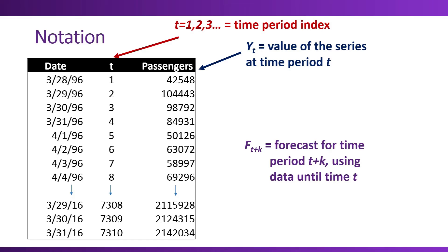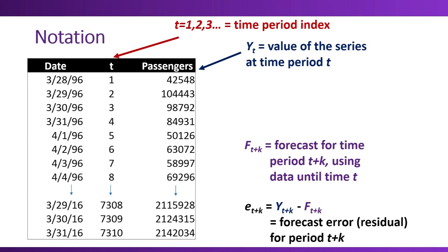Another important notation is E sub T plus K. E refers to the forecast error, also called a residual. It's the difference between the actual value in our series — what we called Y_(T+K) — and the forecast at that same time period, which we denoted F_(T+K). So E sub T plus K is the forecast error for period T plus K. With these notations, we can start talking about time series forecasting, about building models, and about performance evaluation.